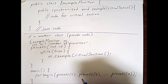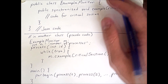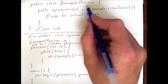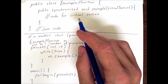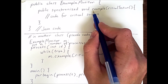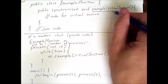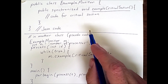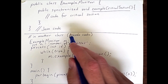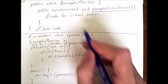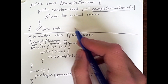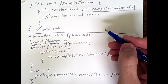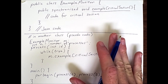What that means is that if multiple threads or processes have access to a particular instance of this class, and those different threads or processes attempt to execute this exampleCriticalSection method, then only one will ever be able to execute it at a given time. If one thread or process attempts to execute this method while another is in the middle of executing it, it will block and be forced to wait until the first one finishes.